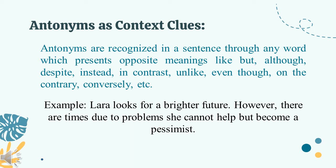For example: 'Lara looks for a brighter future. However, there are times due to problems she cannot help but become a pessimist.' Here, two words contradict one another: 'brighter' and 'pessimist.' When we say pessimist, it is a person who tends to see the worst aspect of things or believes the worst will happen — which contradicts the word 'brighter.' That is why we categorize pessimist under antonyms of the word brighter.